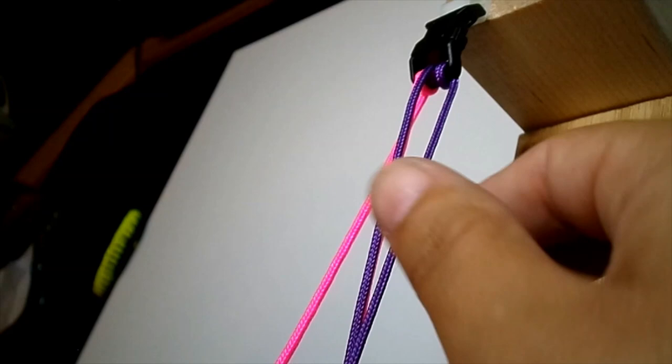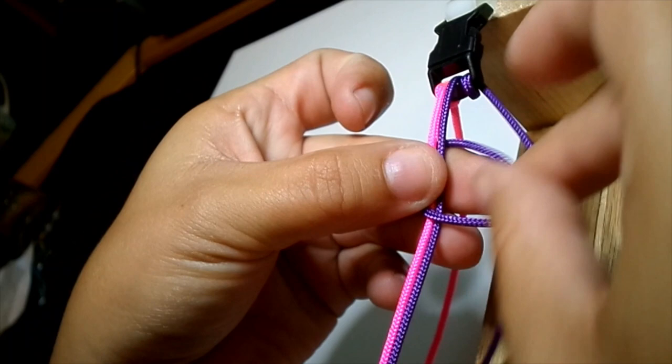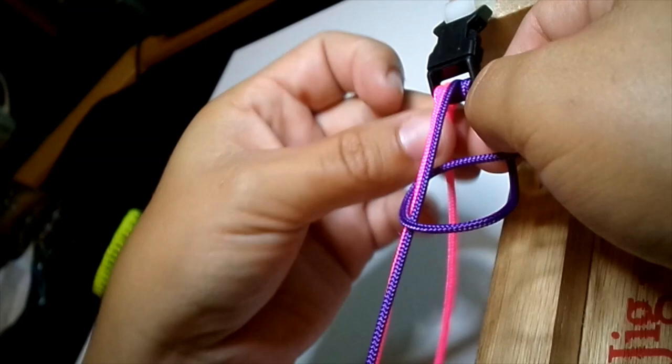So we're going to start doing the single Genoese, very simple. You'll take either end, doesn't matter which one, I'm going to pick purple, make a loop, bring this over, go underneath the center cords and pull through your hole, and bring this tight.